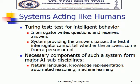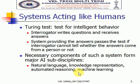For a system to act like a human being, it should have the following four capabilities: first, natural language processing; second, knowledge representation; third, automated reasoning; and fourth, machine learning.